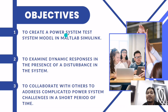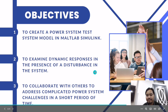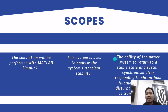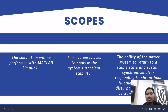Our objectives are: first, to create a power system test model in MATLAB Simulink; second, to examine dynamic responses in the presence of disturbance in the system; and lastly, to collaborate with others to address complicated power system challenges in a short period of time. The scope of this lab: this solution will be performed with MATLAB Simulink; this system is used to analyze transient stability; and the ability of the power system to return to a stable state and sustain synchronism after responding to abrupt load fluctuations and fault disturbances, also known as transient stability.